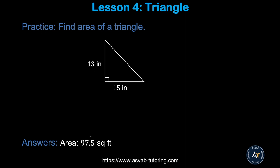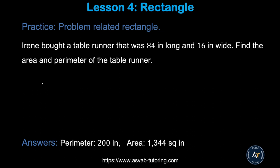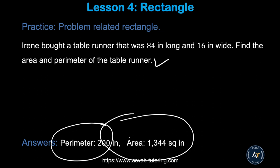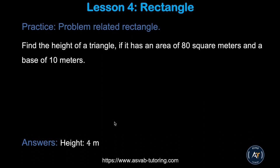Pause the video and try the practice problems by yourself. One problem asks you to find the area and perimeter of a table runner — make sure you get perimeter = 200 and area = 1344 square inches. Another problem requires finding the height; make sure you get height = 4.